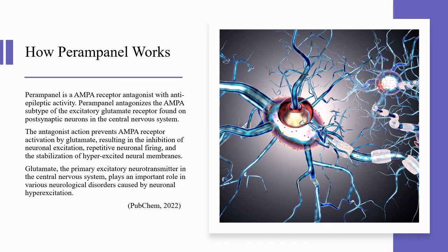Perampanel is an AMPA receptor antagonist with antiepileptic activity. It antagonizes the AMPA subtype of the excitatory glutamate receptor found on postsynaptic neurons in the central nervous system. This antagonist action prevents AMPA receptor activation by glutamate, resulting in the inhibition of neuronal excitation, repetitive neuronal firing, and the stabilization of hyperexcited neuromembranes.